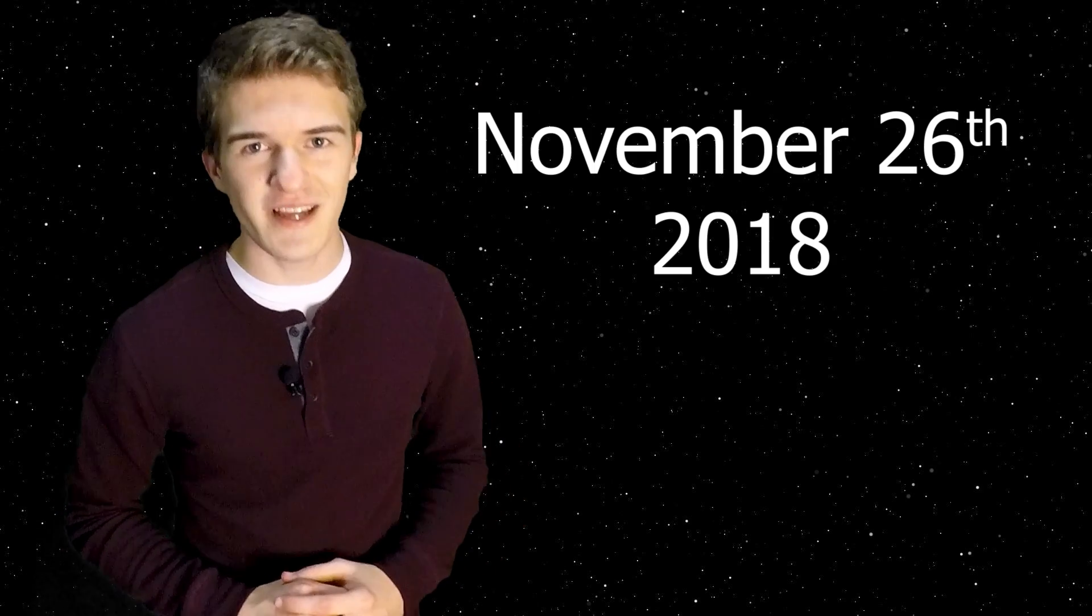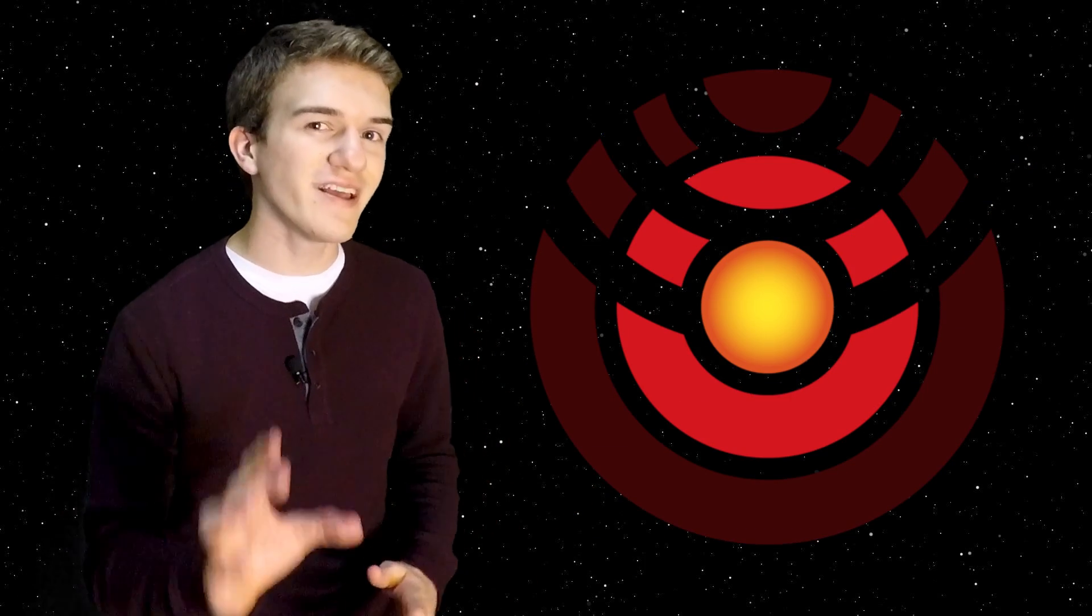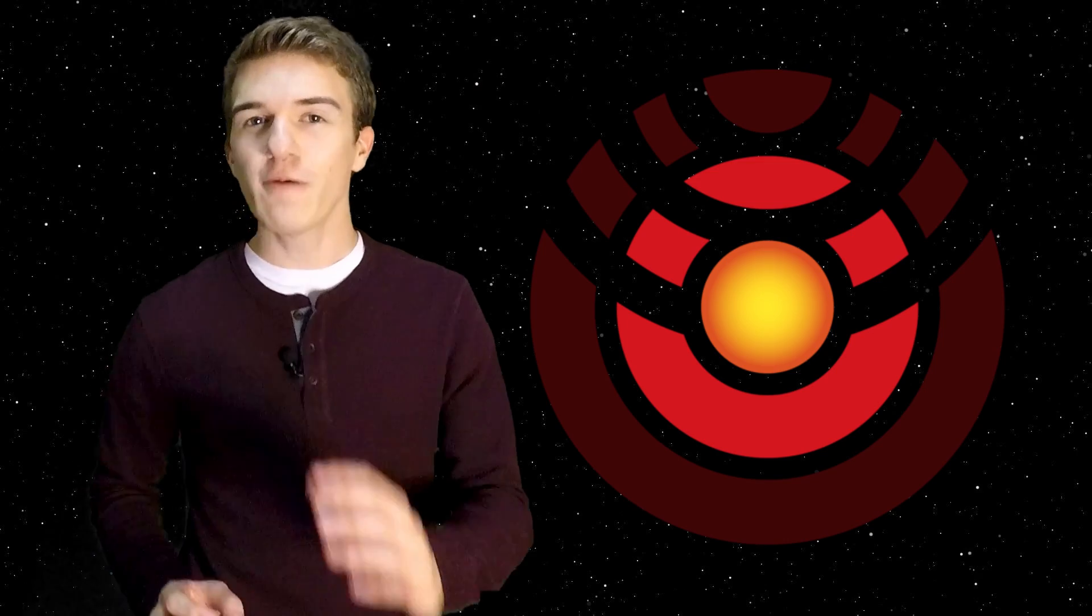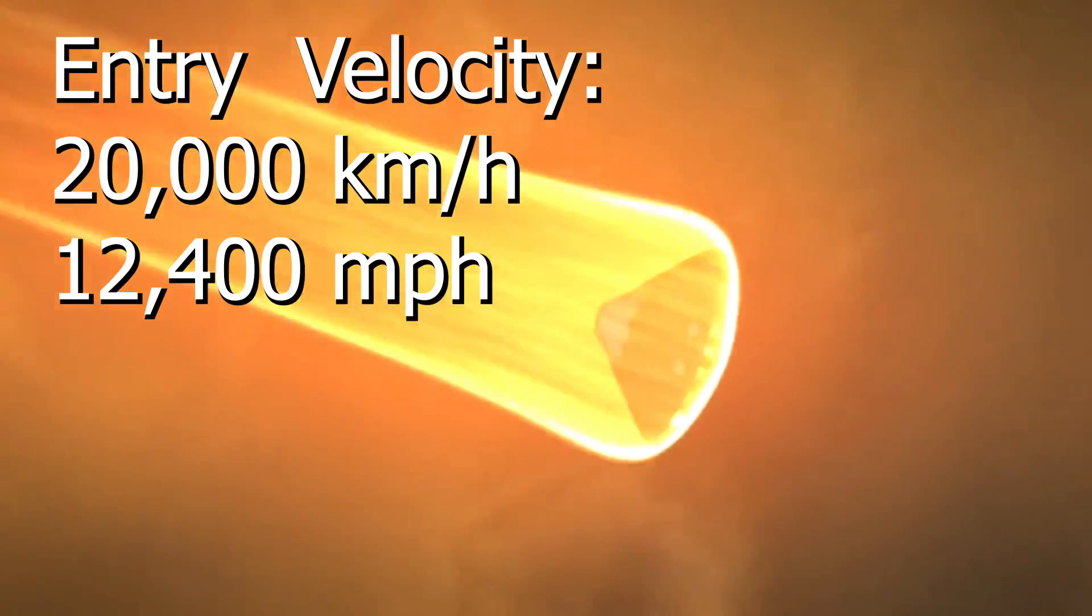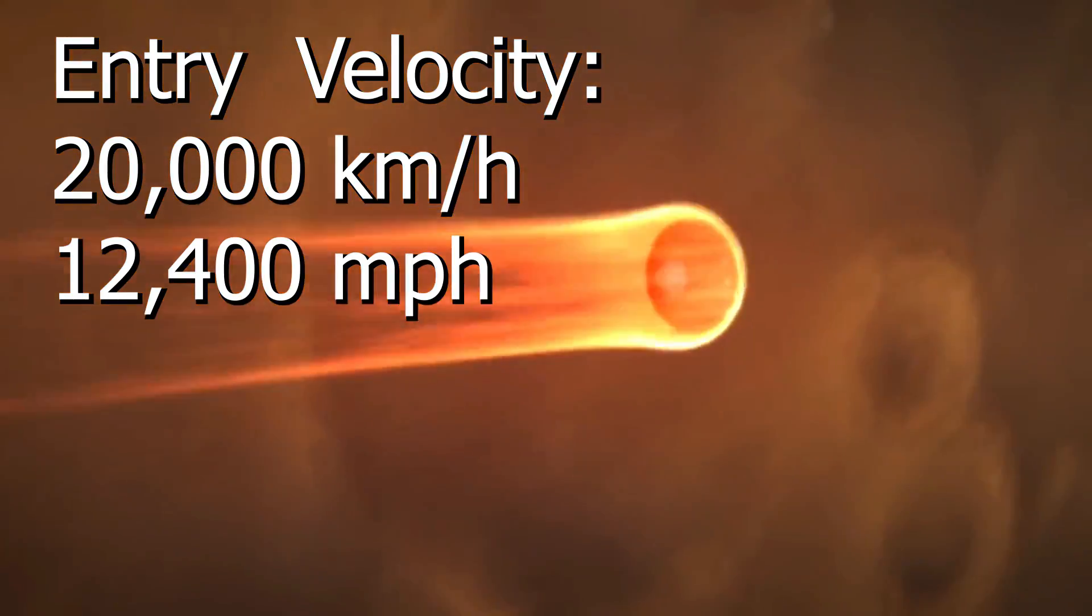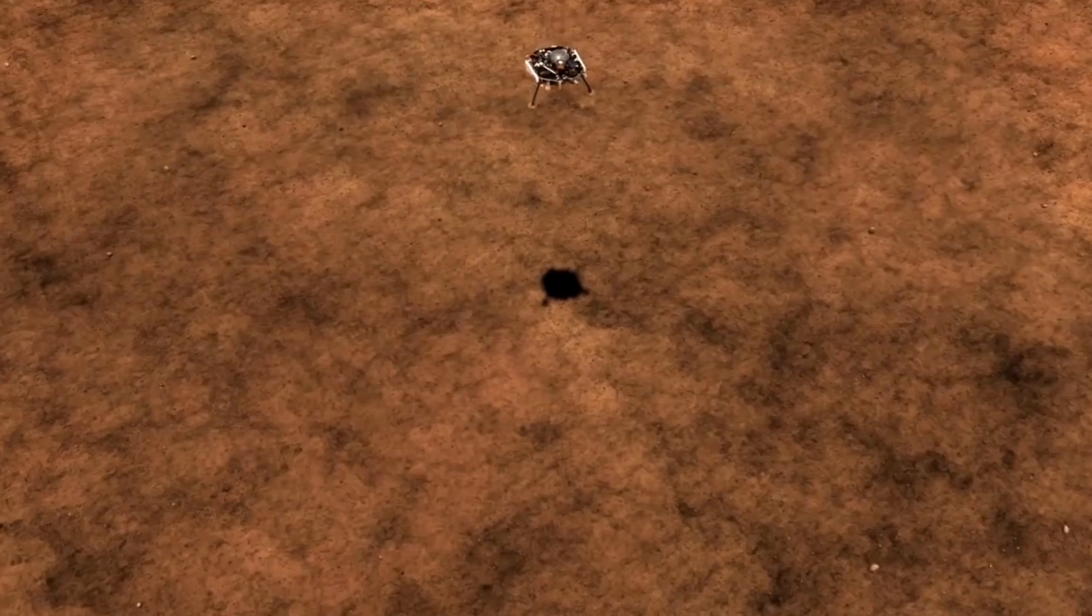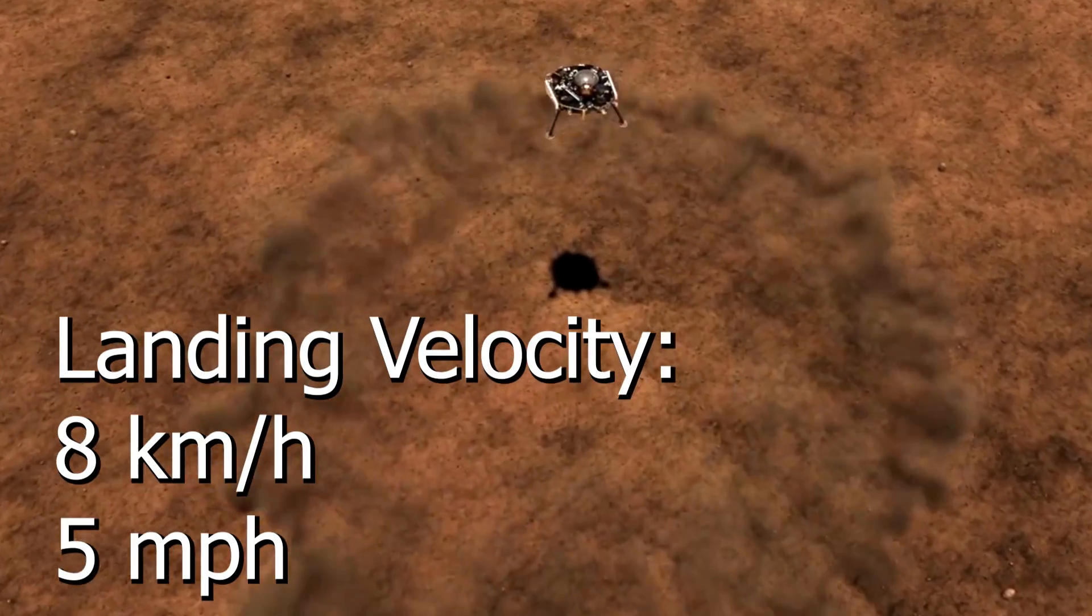On November 26th, 2018, NASA will attempt to land its next robotic mission on the surface of Mars: the InSight lander. When InSight enters the Martian atmosphere, it will be traveling at 20,000 kilometers per hour, and over the course of only 6.5 minutes, it will slow down to just 8 kilometers per hour. So how is it going to do that? Let's talk about that.